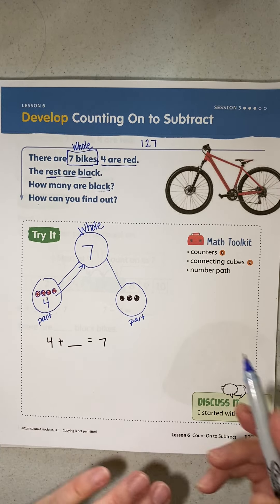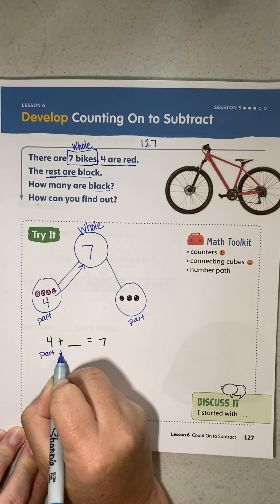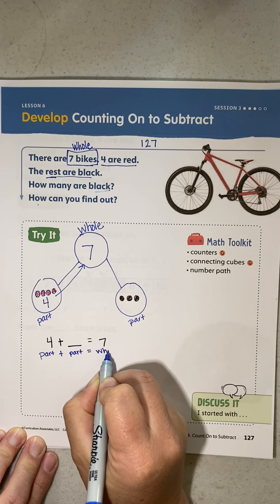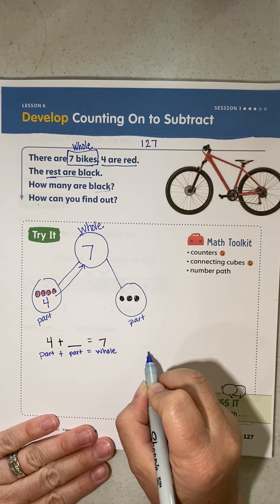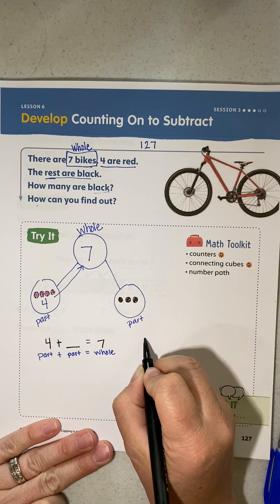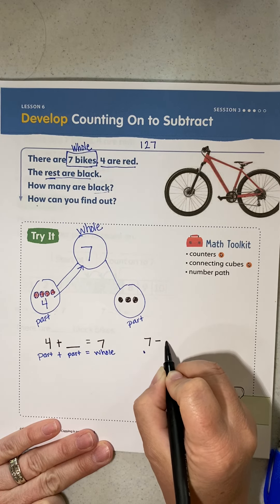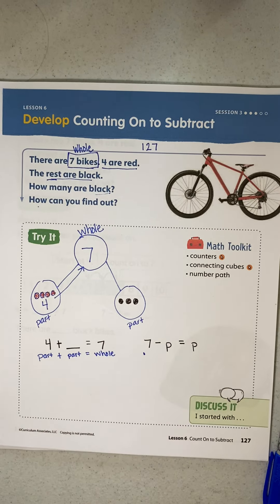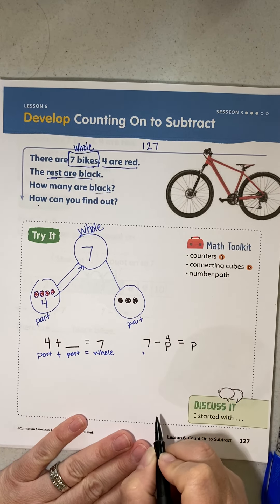The reason I can write that is because I know that a part plus a part equals a whole. I also know that the whole minus the part equals a part, right? And the part that we know is four.